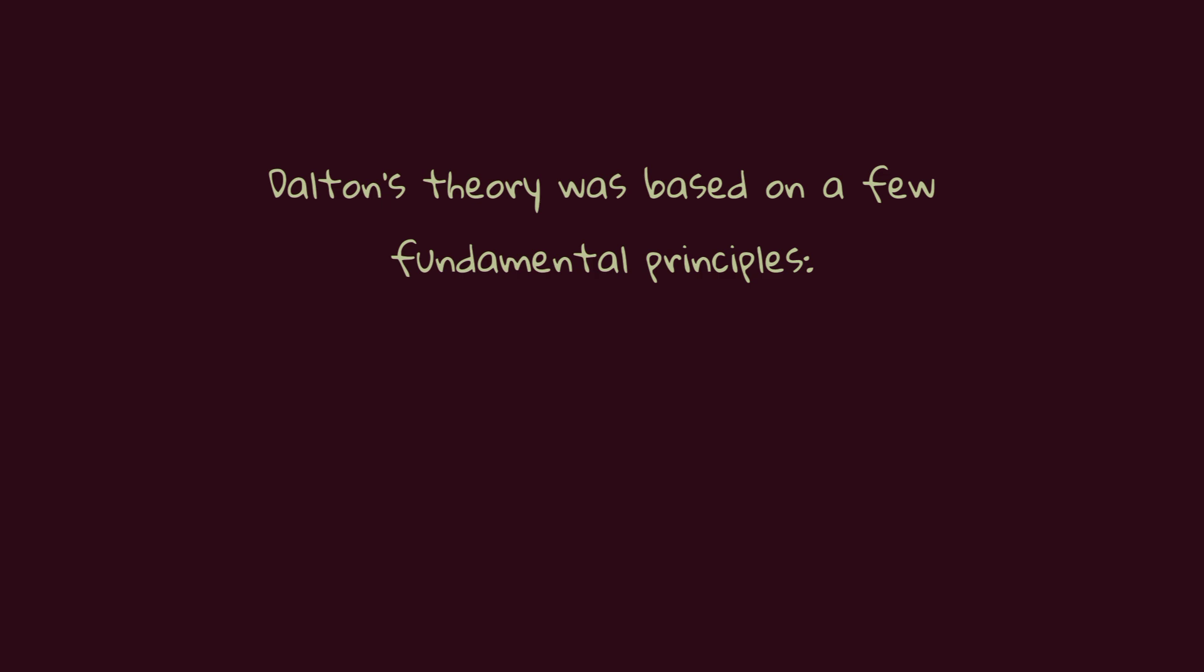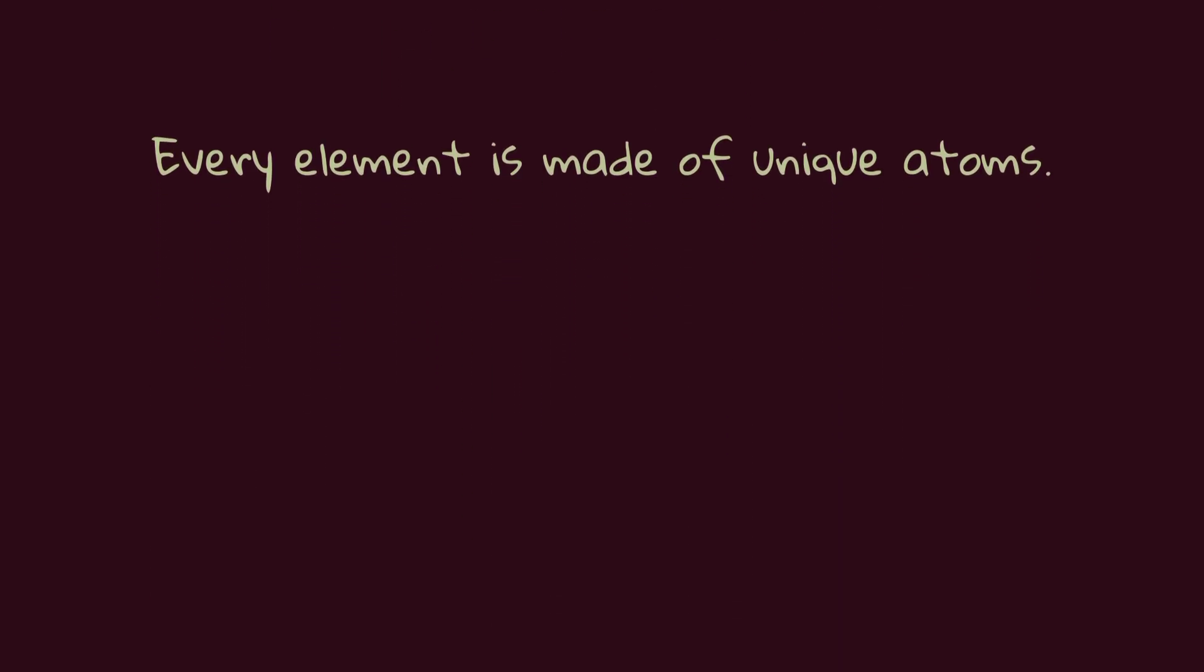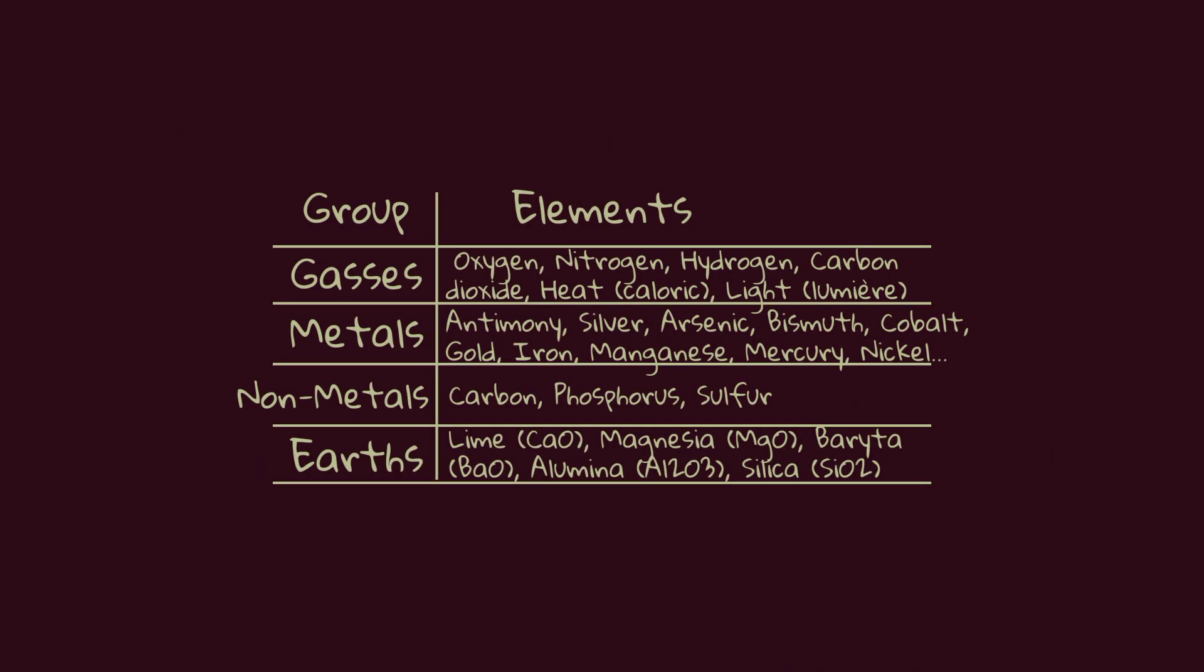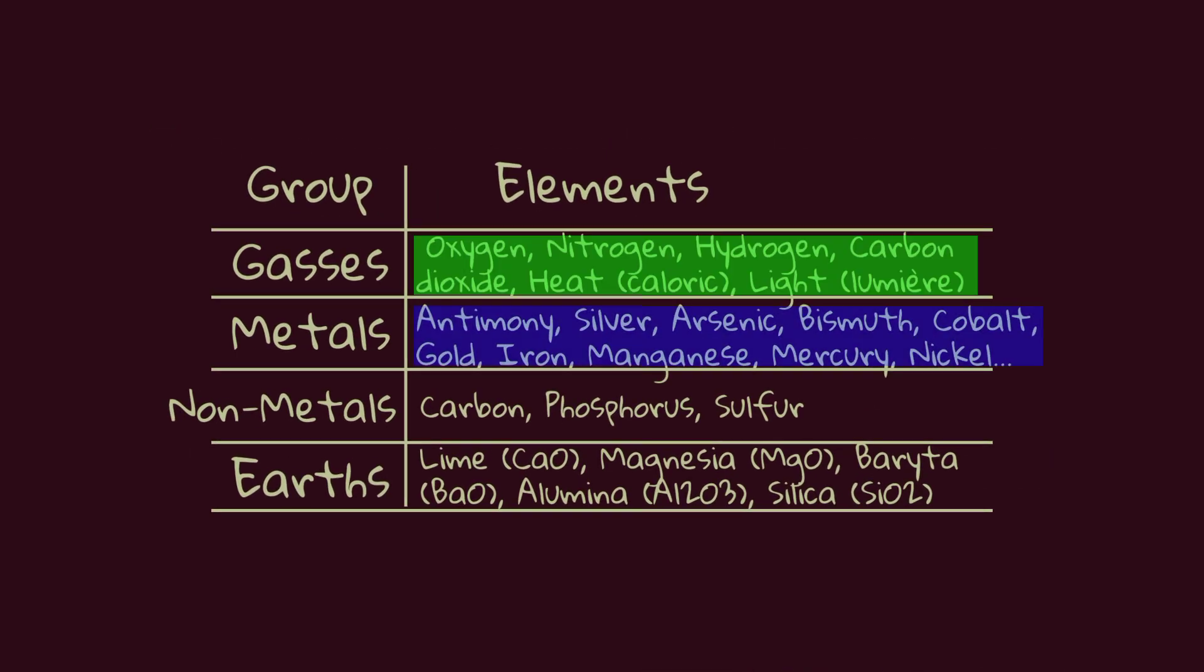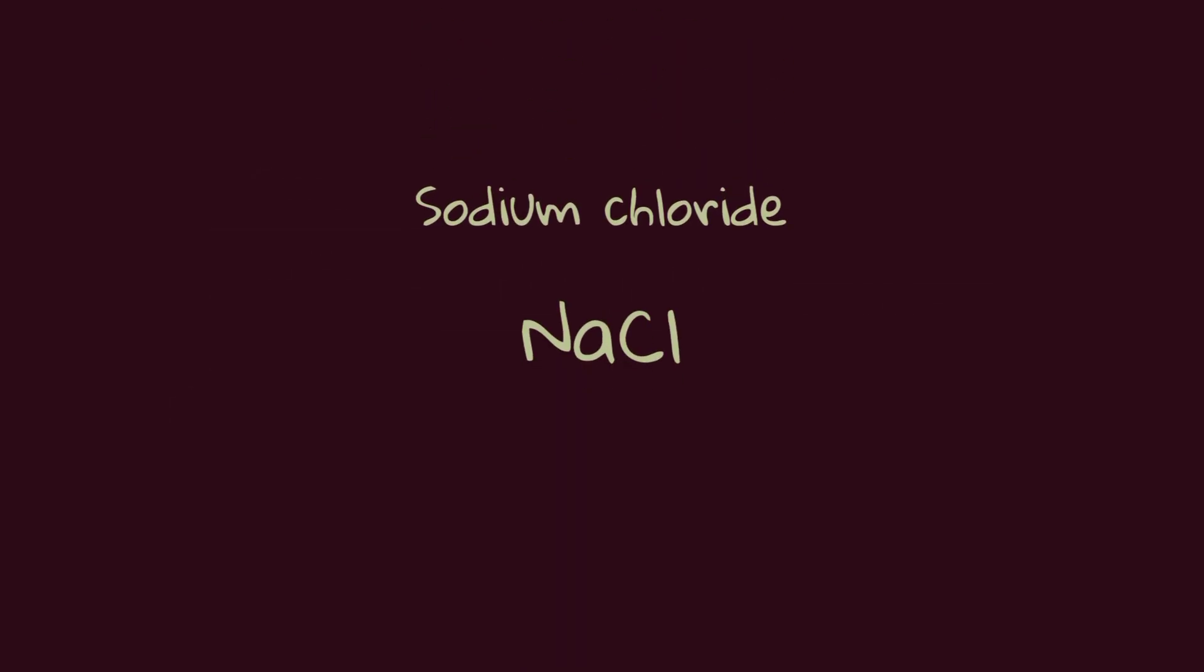Dalton's theory was based on a few fundamental principles. Every element is made of unique atoms. For example, an iron atom is completely different from an oxygen atom. All atoms of the same element are identical in mass and size. Atoms of different elements have different masses and sizes. Chemical compounds are formed by the combination of atoms of different elements in specific fixed ratios.